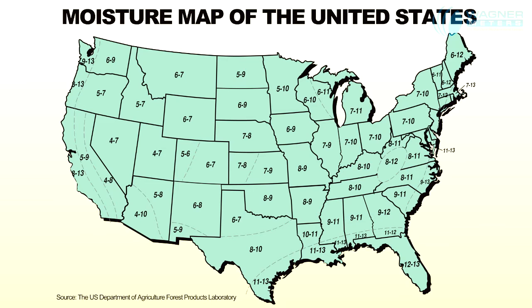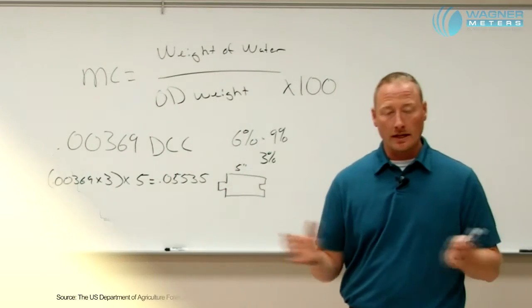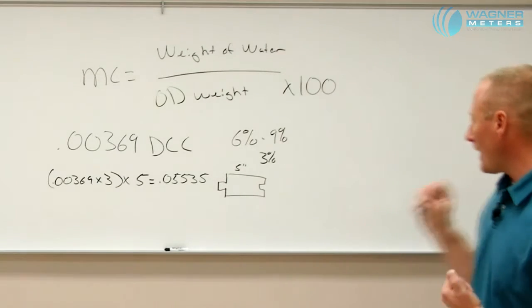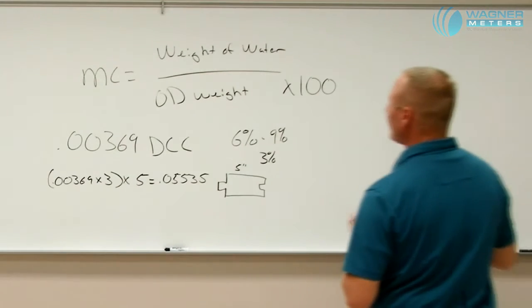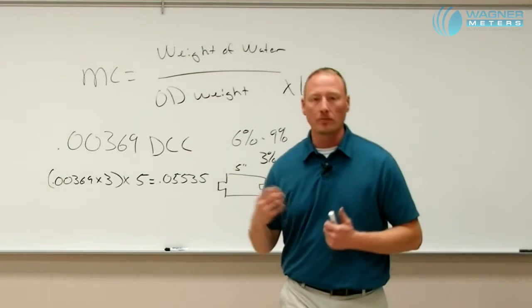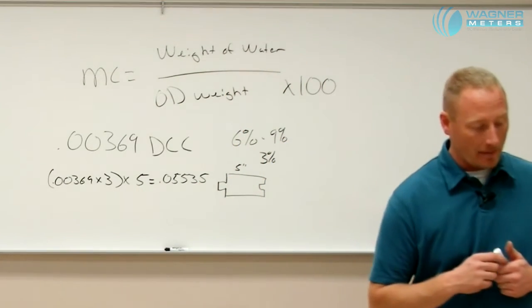Obviously in wetter, damper conditions with higher relative humidity, we expect much more swelling. In areas of drier, lower humidity, we're going to expect much more shrinking. So knowing what or how much potentially that change is going to be helps us dictate how much movement we're actually going to have in that material.